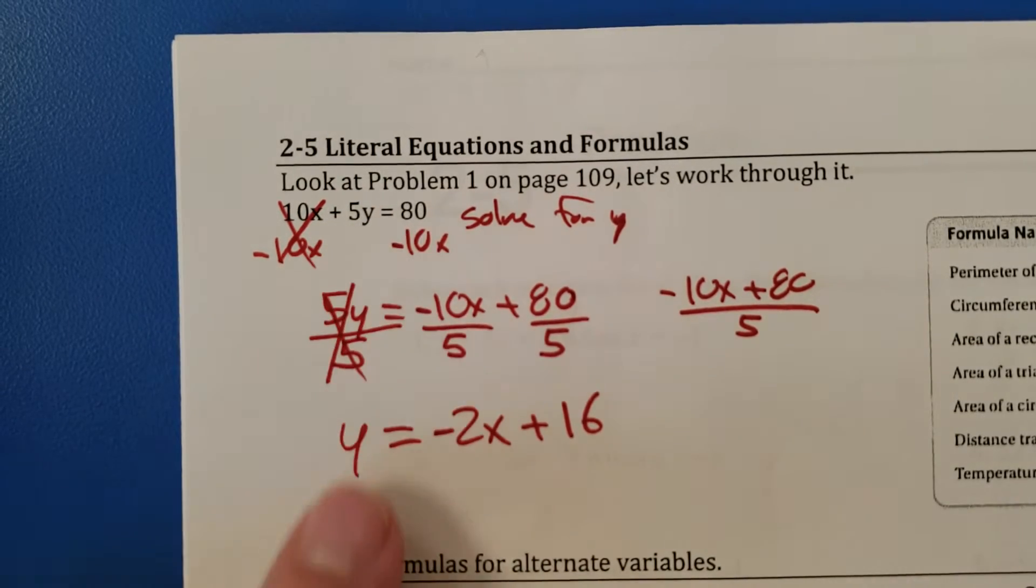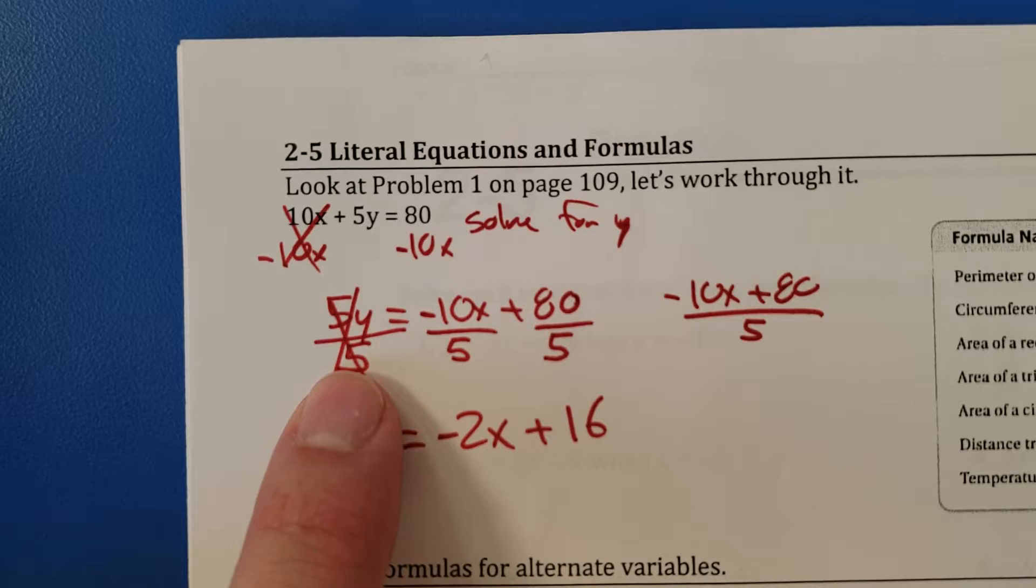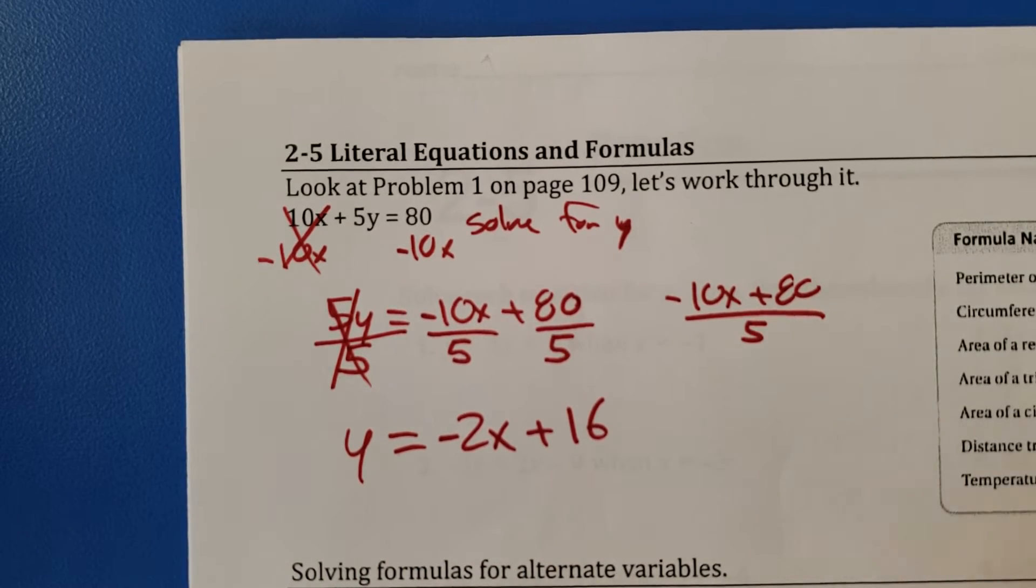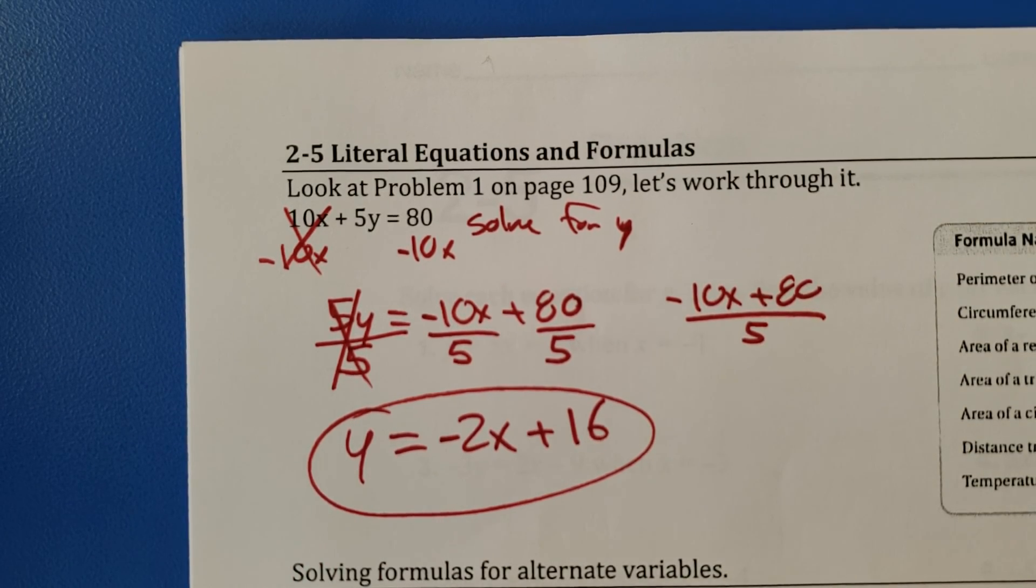So when you're solving for y, get rid of the x, divide everything by the number connected to y. Boom. Y is all by itself. And then we're good to go. Boom.